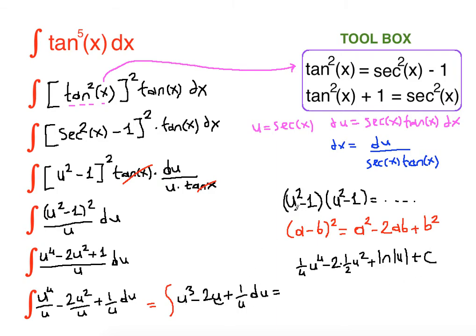Now we are going to bring u back. What was u? It was secant of x. So one fourth secant fourth x minus, the 2 and one half cancel out, secant squared of x plus ln of secant x plus c.